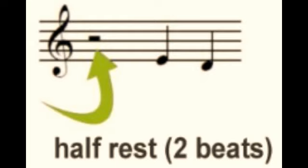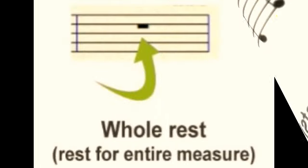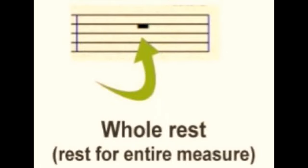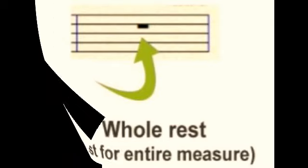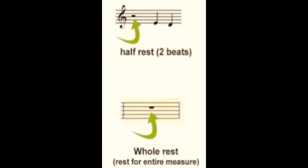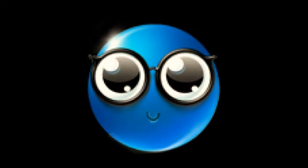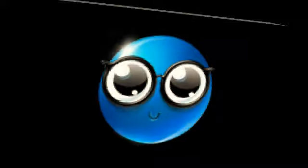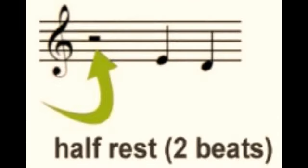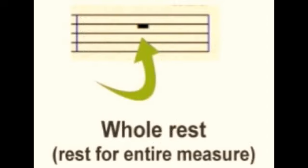A half rest and a whole rest look very similar. If you look closely, the half rest sits on top of a line while the whole rest hangs from the top of a line. This distinction doesn't really matter much in practice — you just glance at it and can see that there are two beats missing in the measure. A whole rest is easy to spot because most times it will just be a whole empty measure.